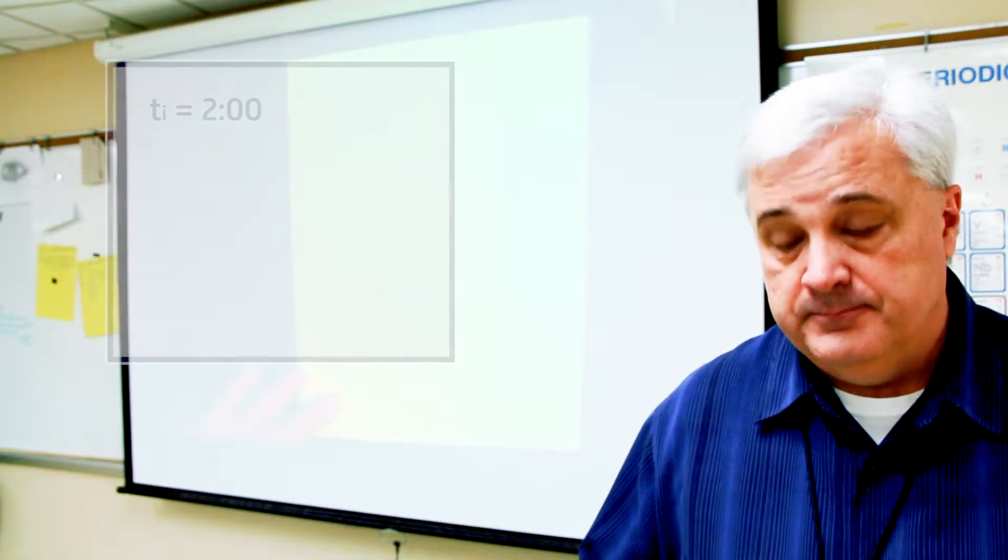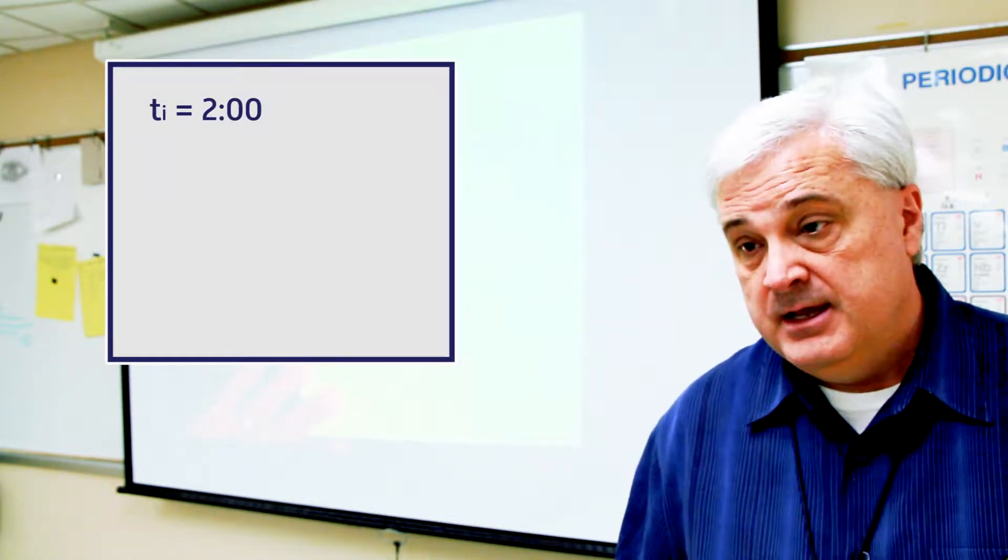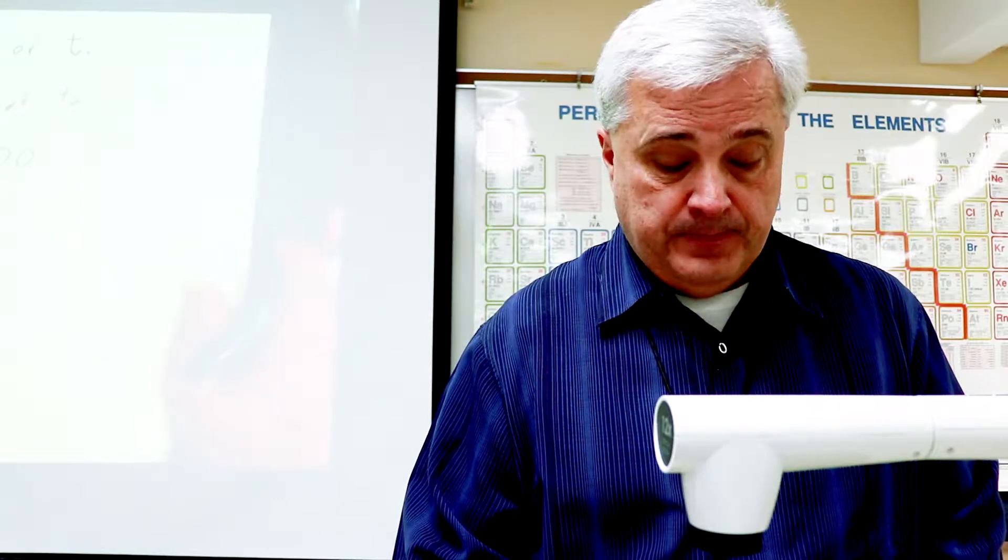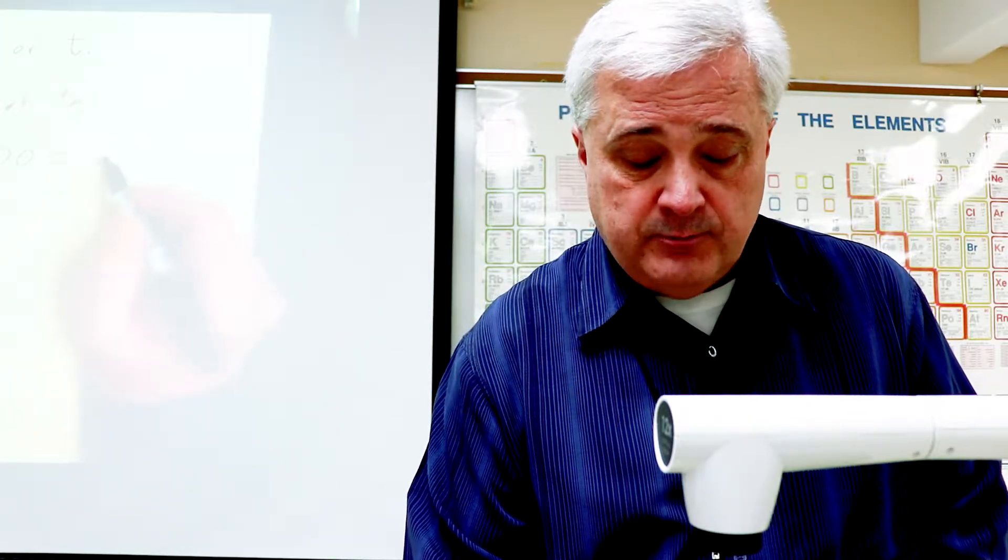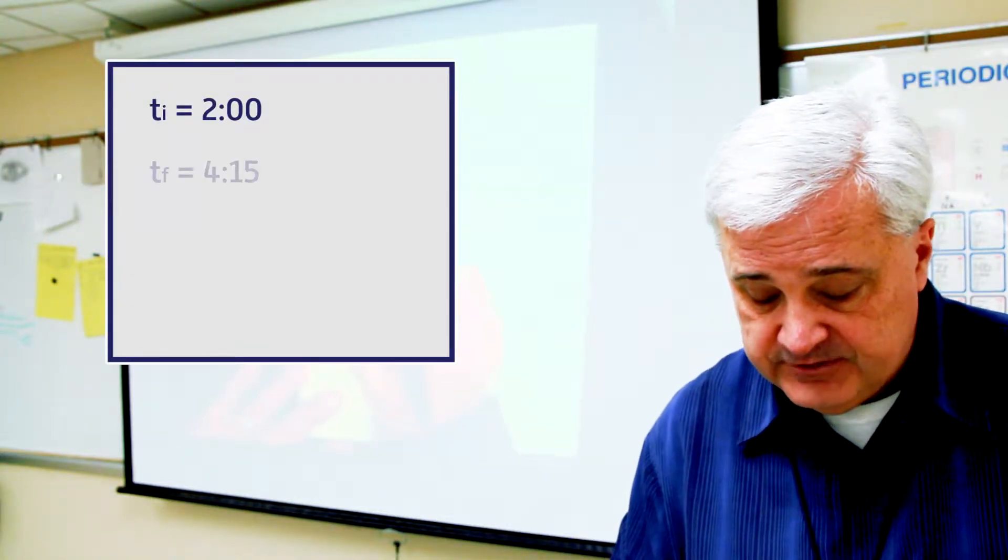If something starts on the clock and you may say, John began his walk at 2 o'clock. So that's a clock time. And we need to know if you're using military time or the AM PM thing because that also has an effect. So 2 o'clock would be the initial time. And he traveled until it was 4:15.